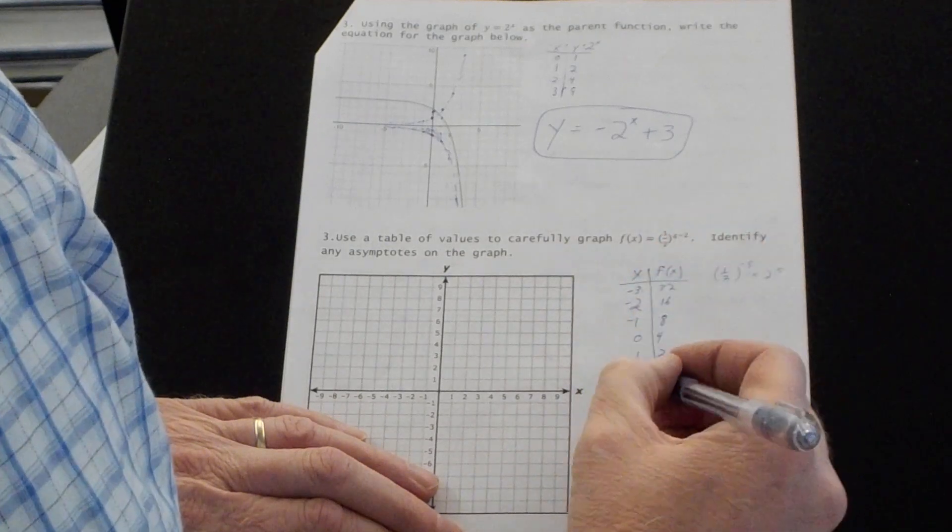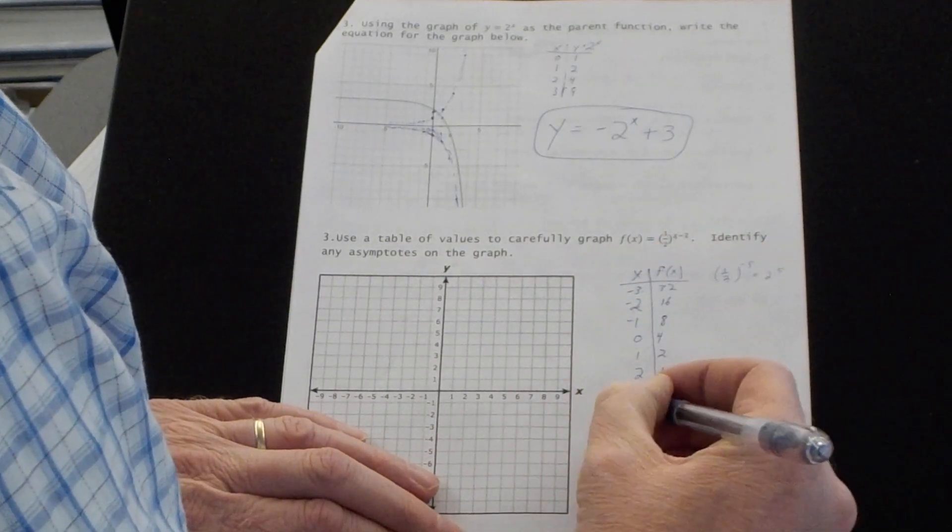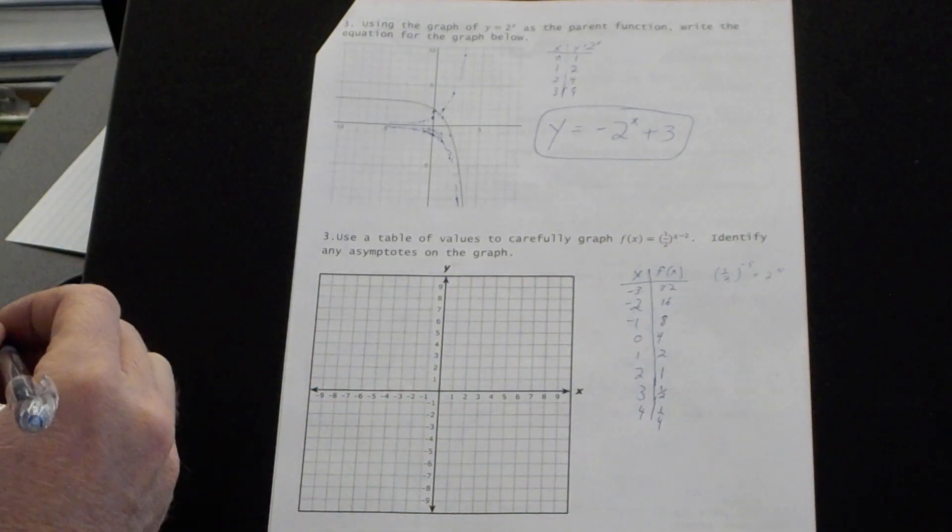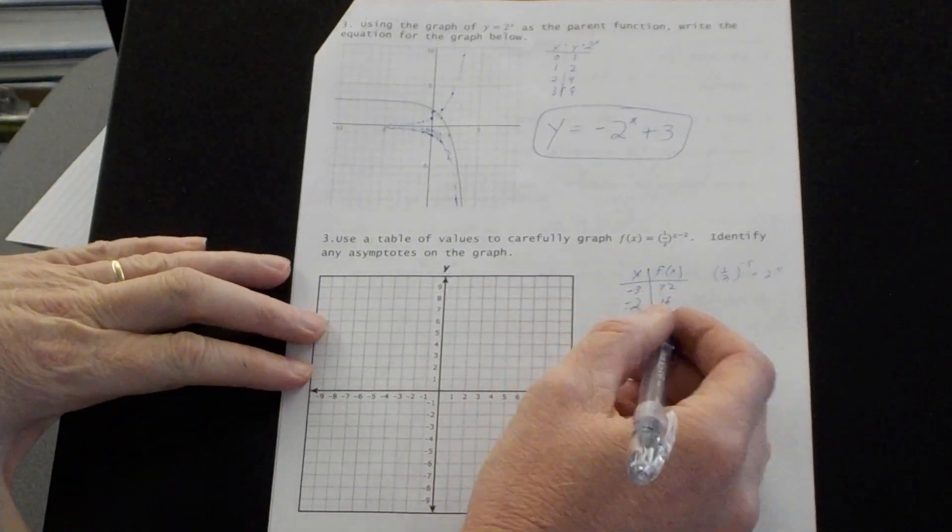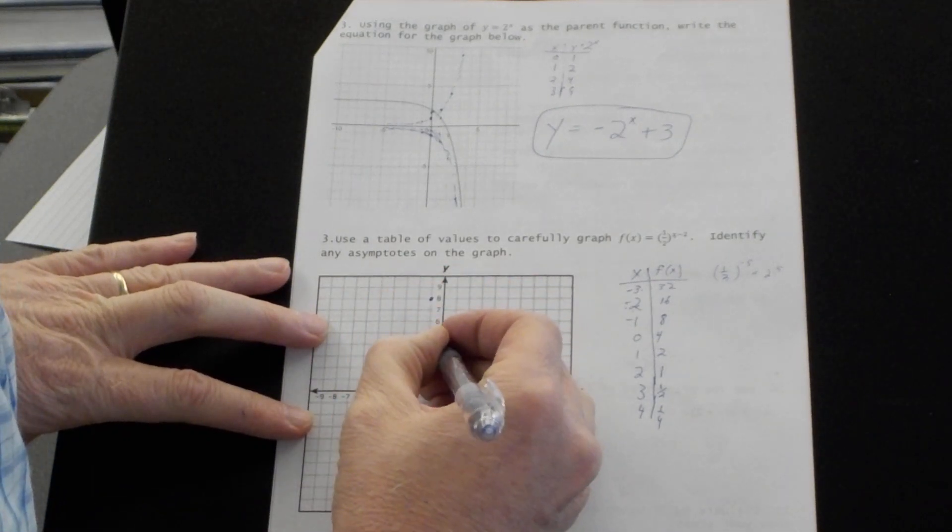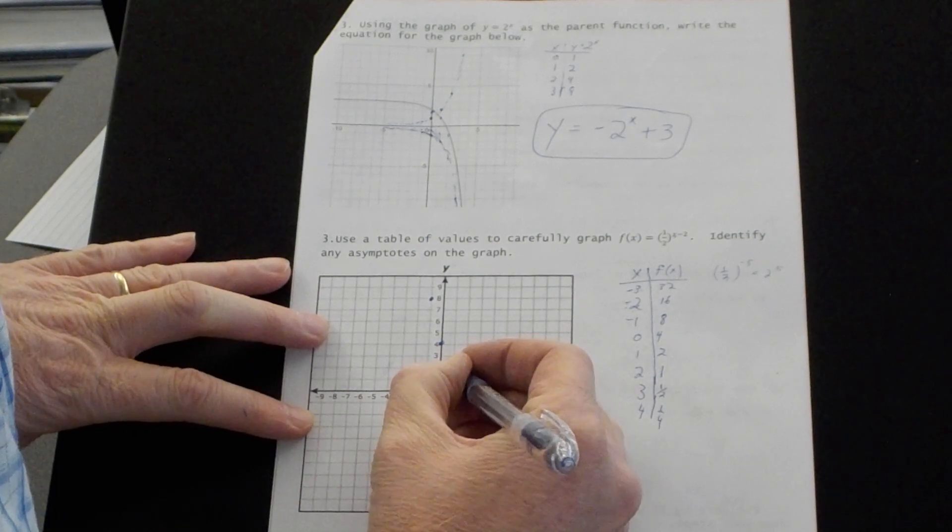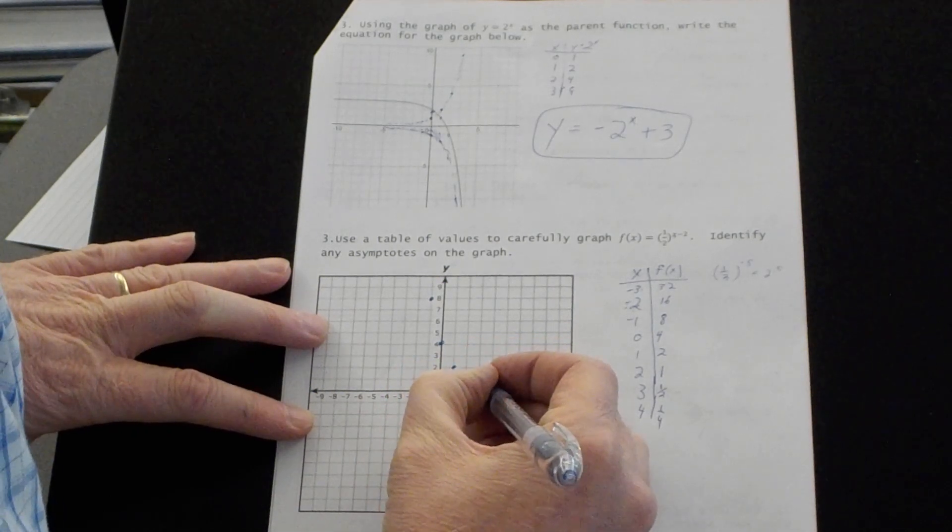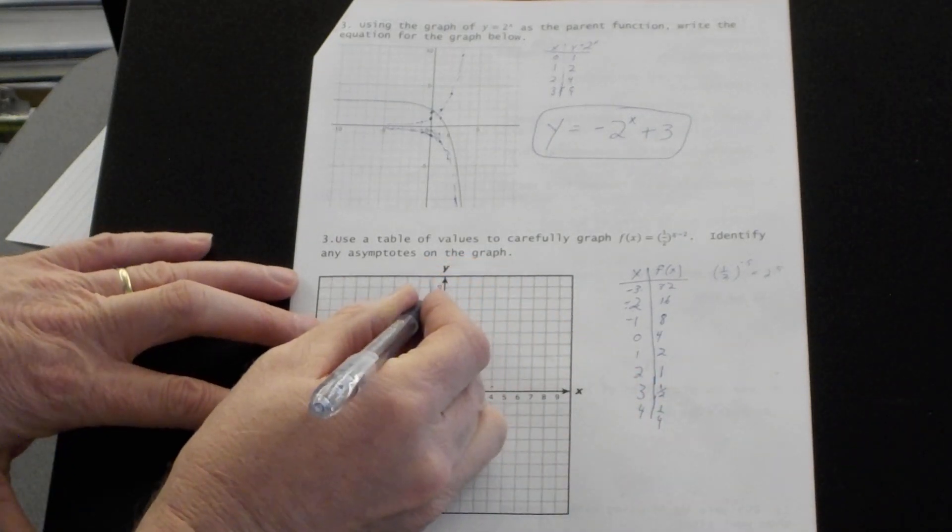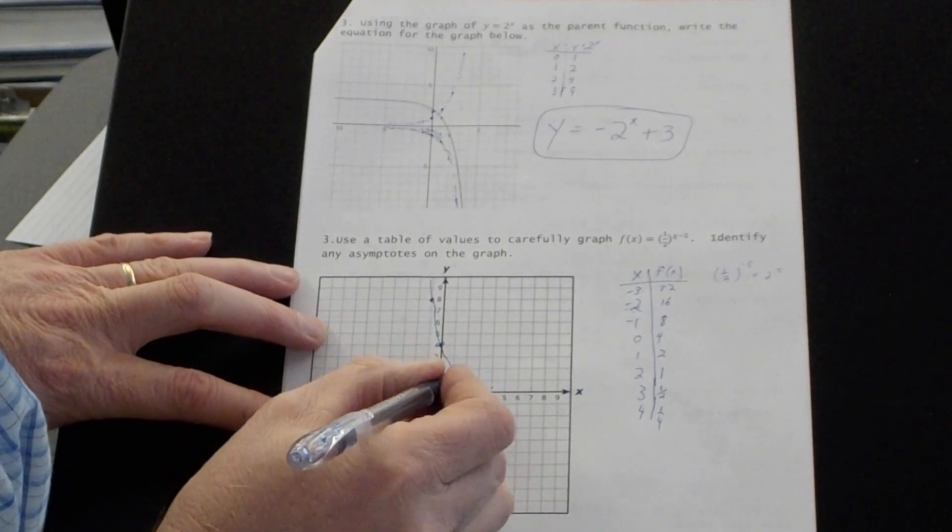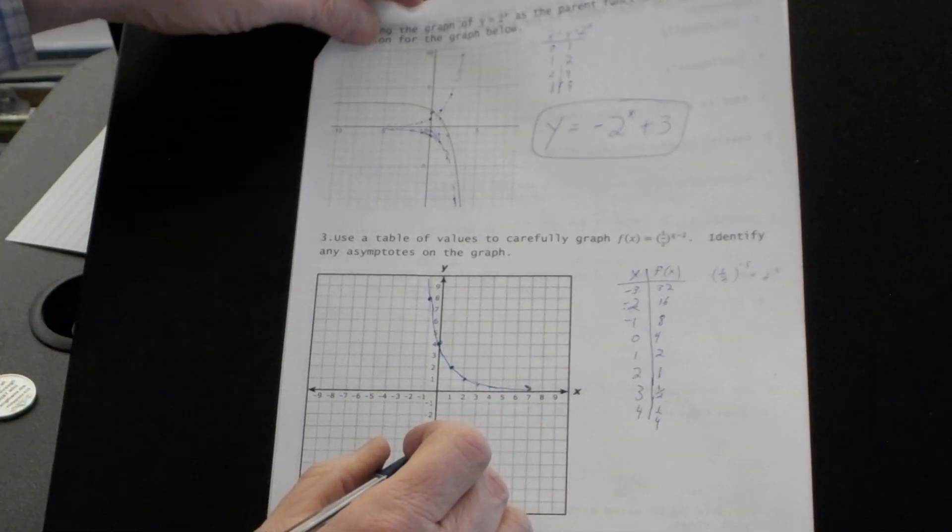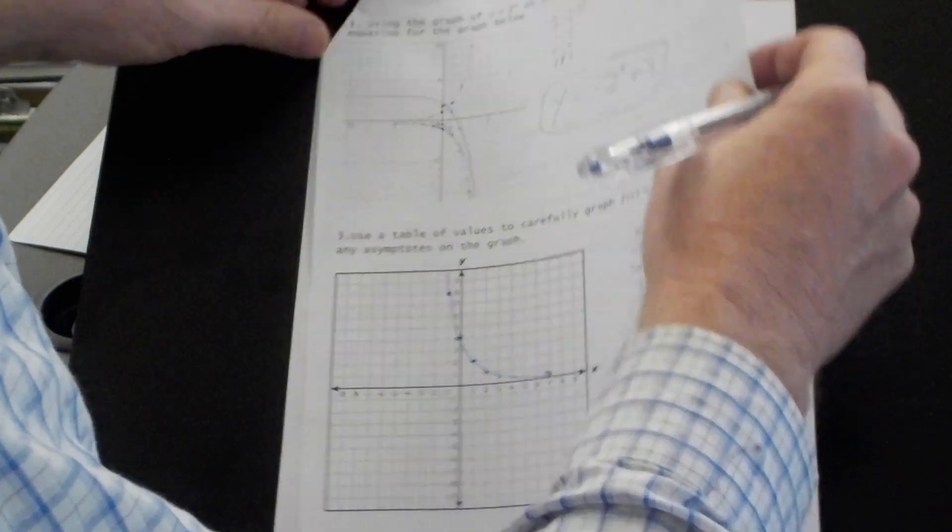Let me put a few more here. Three minus two is one. One half to the first is a half. Four minus two is two. That's a fourth. I got enough here. Negative one eight is showing up. Zero four is showing up. One two is showing up. Two one is showing up. Three and one half, four and a fourth and so on. So we're starting up here, working our way down, curving down here and getting real close. The x-axis is an asymptote.